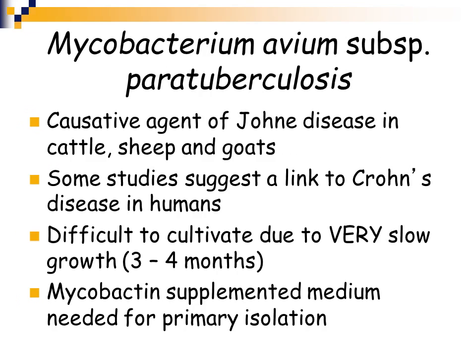Mycobacterium avium has a subspecies paratuberculosis, which is the causative agent of Johne's disease — a disease in cattle, sheep, and goats. There are studies that link mycobacterium paratuberculosis to Crohn's disease in humans. Crohn's disease in humans is similar to Johne's disease in cattle, sheep, and goats. Since they are similar and Johne's disease is caused by mycobacterium paratuberculosis, there is a lot of research being done to investigate whether Crohn's disease is also due to this organism.